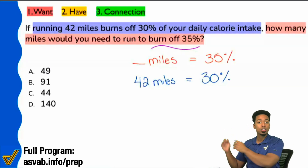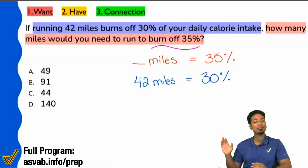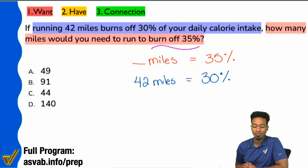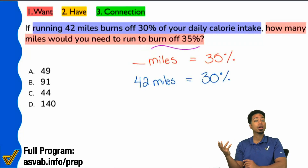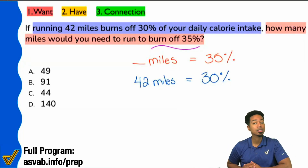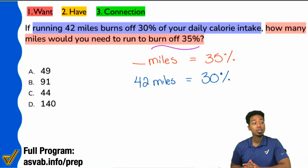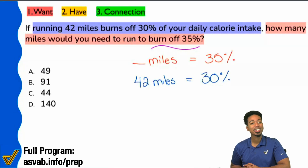Do you agree with all of the information I have written down here? We're comparing the same things in the same way: blank miles, 35%, 42 miles, 30%. Are we comparing the same things in the same way? So my last follow-up question: can we write a proportion from this? Absolutely.